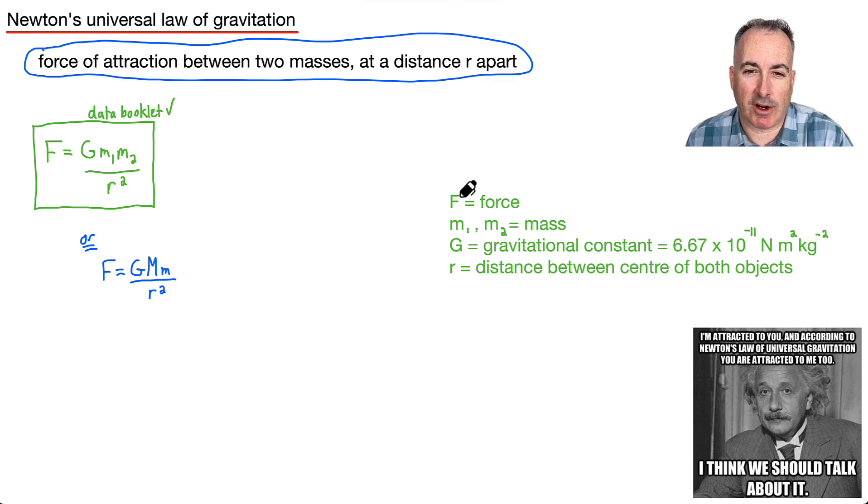Let's define all our variables. F is the force, which is in newtons. M1 and M2 are the masses, so those are in kilograms. Then we have Newton's universal gravitational constant, capital G, which has a number at 6.67 times 10 to the minus 11 newton meters squared per kilogram squared. Finally we have r, which is the distance between the center of those two objects, so that'll be measured in meters.